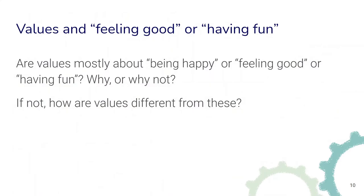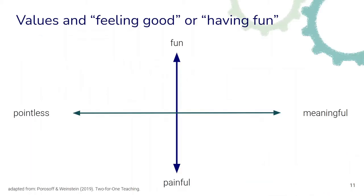Here's another question to help us think further about values. Are values mostly about being happy, feeling good, or having fun? Why do you think so or why not? And if not, how are values different from these? A sorting activity can help us understand the difference between value living and simply having fun or feeling good. It's a quadrant where we sort experiences based on how fun or painful they are, and based on how pointless versus how meaningful they seem.